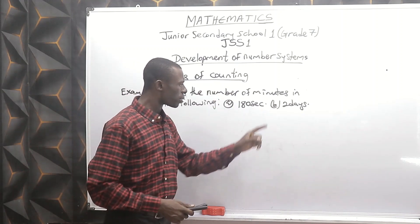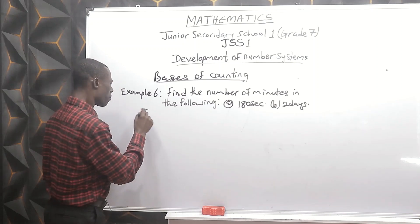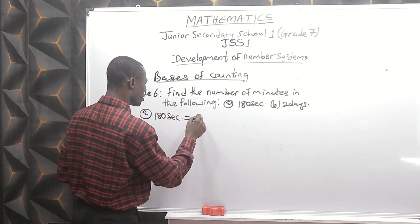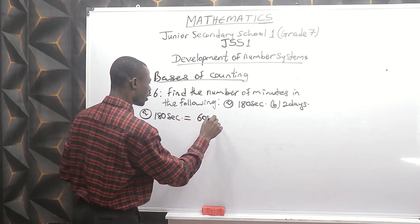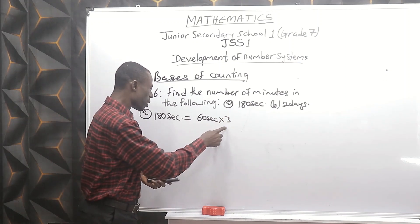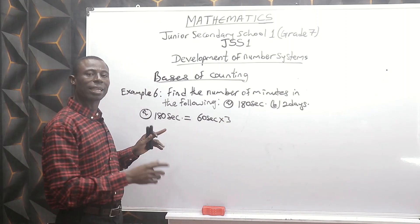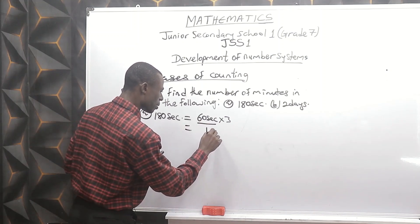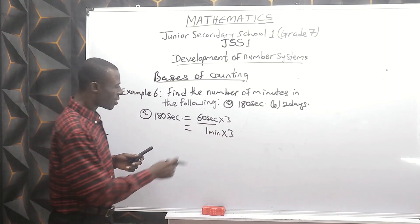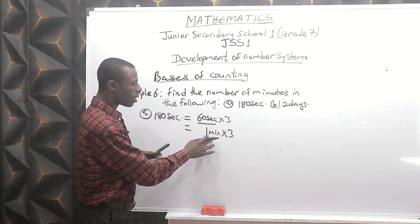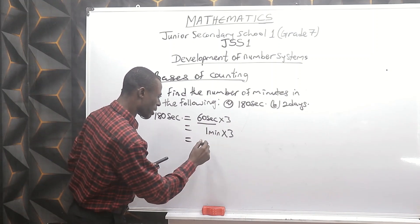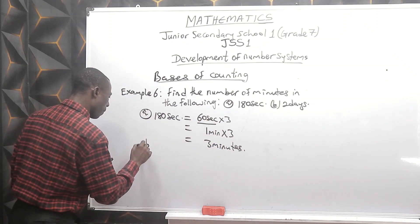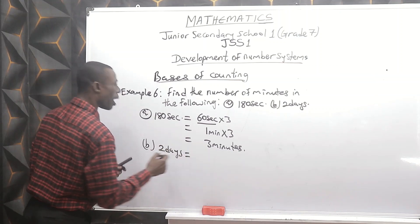Find the number of minutes in the following: 180 seconds. 180 seconds is the same thing as 60 seconds times 30. 60 times 3 is 180, and 60 seconds is one minute, times 30. So one minute times 30 is 30 minutes.